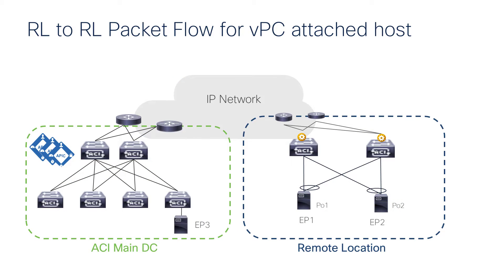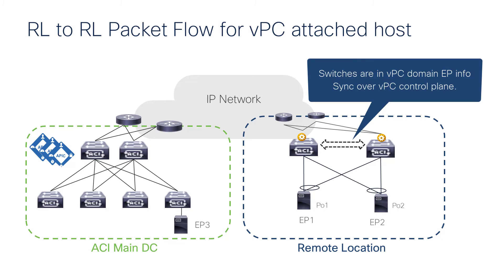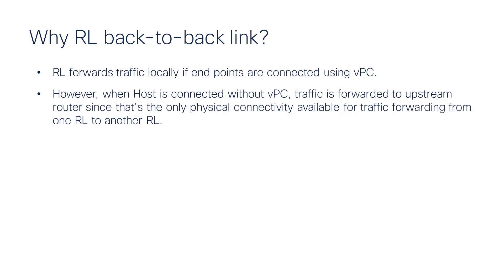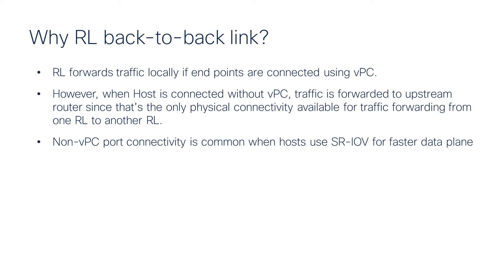Let's take a look at how traffic forwarding happens with VPC attached hosts. When you have a VPC attached host, the control plane of the VPC syncs the endpoint information across both leaves, so packets from one endpoint will be locally forwarded from the same remote leaf without going to the upstream router. But if the remote leaf is not connected back-to-back and the host is not connected by VPC, the only network connectivity to the remote leaf is via the upstream router, and a lot of traffic will go there. This non-VPC connectivity is very common when hosts are connected using SR-IOV for faster data plane, because those hosts do not support VPC. So in those cases, there's a lot of traffic that can go to the upstream router, and if you want to save that bandwidth and keep the traffic local to the remote leaf, you can use the back-to-back connected link.